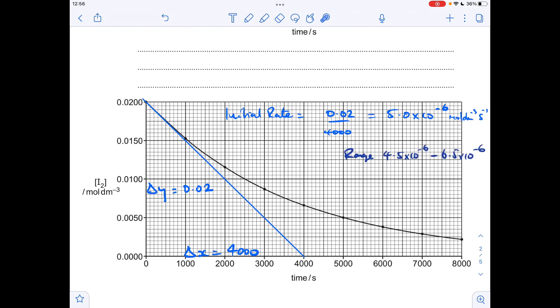Now whenever you've got to calculate the gradient of a tangent, there's always a bit of flexibility. So the range that the exam board allowed here was 4.5 times 10 to the minus 6 up to 6.5 times 10 to the minus 6. You can see mine's obviously within that range.